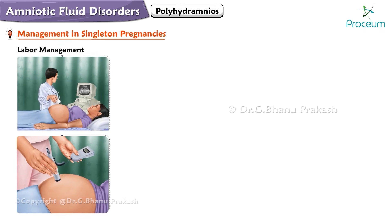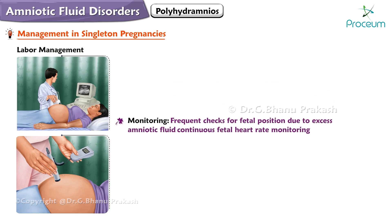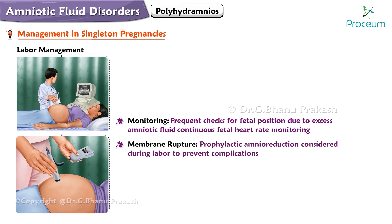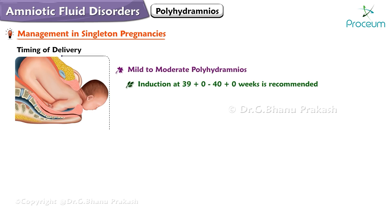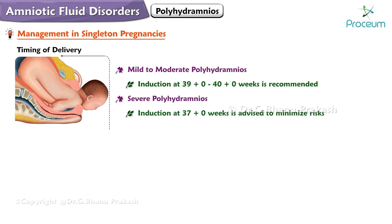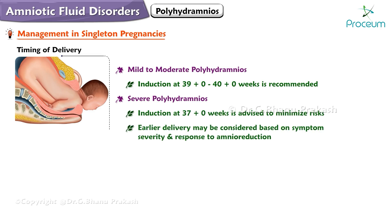Now let's talk about labor management. This involves monitoring with frequent checks for fetal position due to excess amniotic fluid, and continuous fetal heart rate monitoring. Prophylactic amnioreduction may be considered during labor to prevent complications from membrane rupture. Regarding timing of delivery: in mild to moderate polyhydramnios, induction at 39+0 to 40+0 weeks is recommended. In severe polyhydramnios, induction at 37+0 weeks is advised to minimize risks, with earlier delivery considered based on symptom severity and response to amnioreduction.